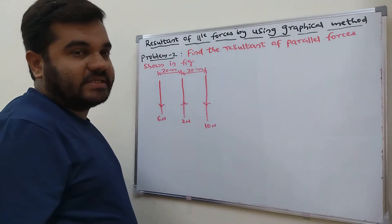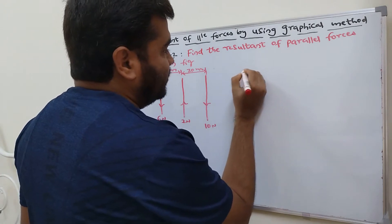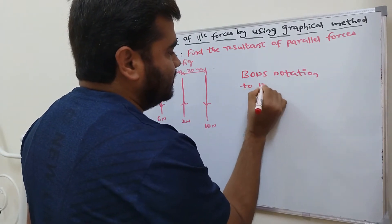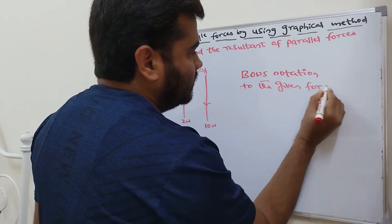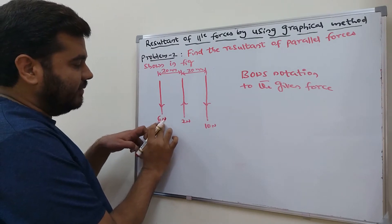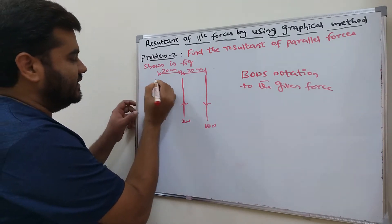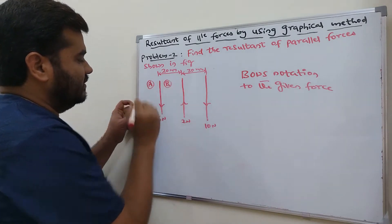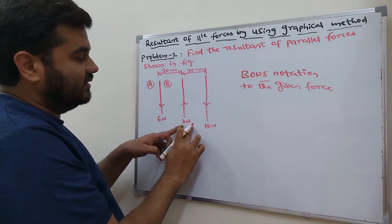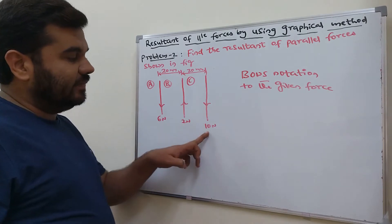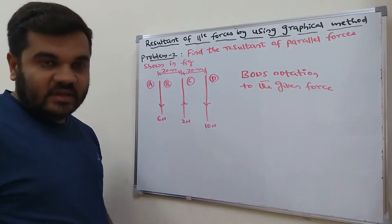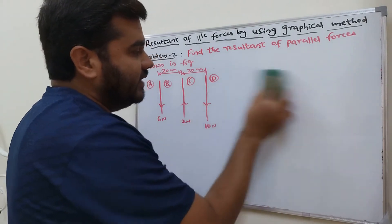We start step by step. The first step is to give Bow's notation to the forces. For the first force of 6 Newton, mark A and B on either side — so 6 Newton is denoted by AB. The second force of 2 Newton is denoted by BC. Similarly, the third force of 10 Newton is denoted by CD. This is Bow's notation, which will be helpful while solving the graphical method.